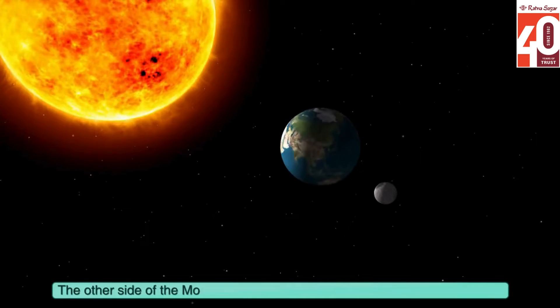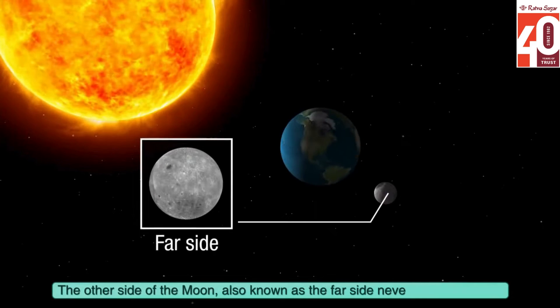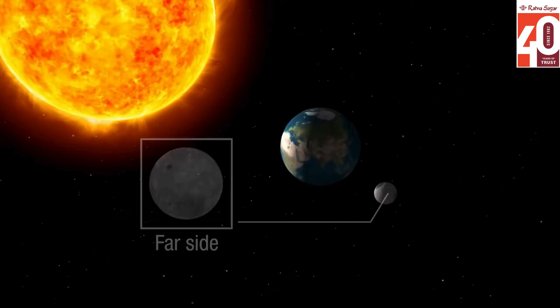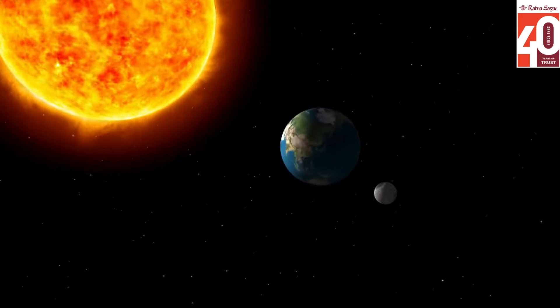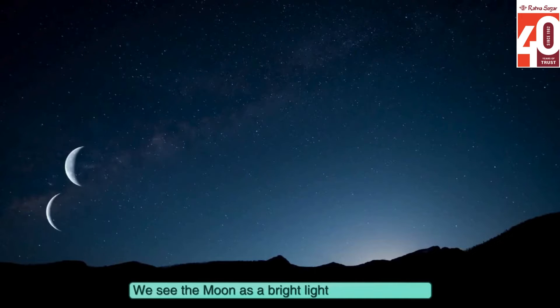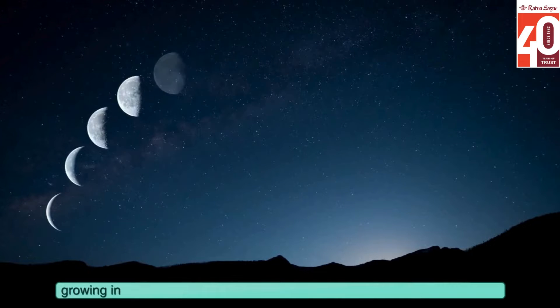The other side of the moon, also known as the far side, never faces the Earth and can only be seen from space. We see the moon as a bright light in the night sky, growing in shape from a thin crescent to a full moon in about 14 days.